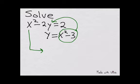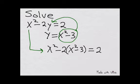and I'll end up with x squared minus 2 times y, which is x squared minus 3, equals 2. Now I'll simplify.